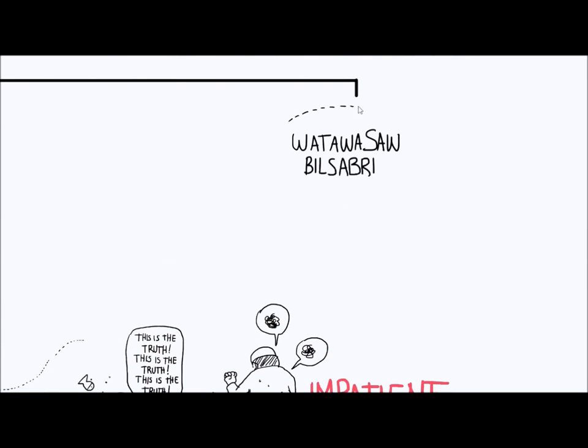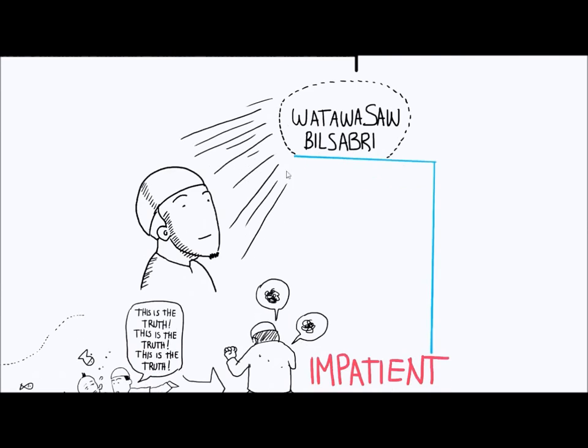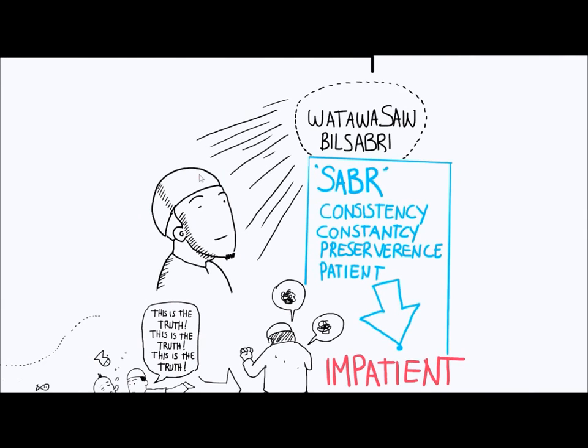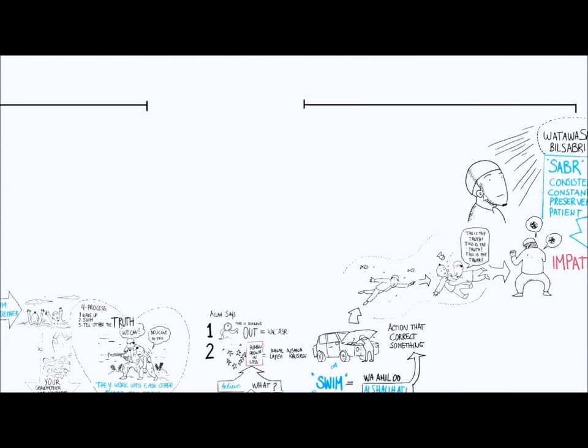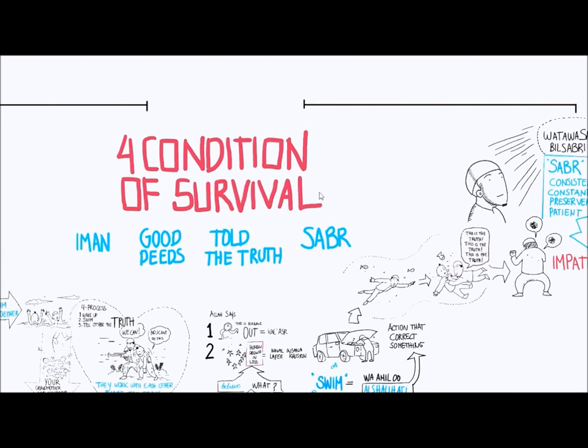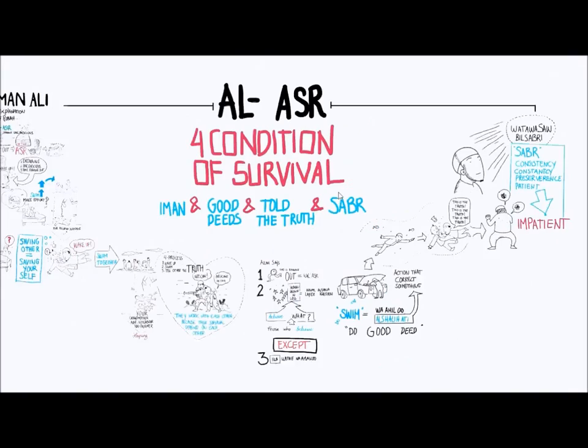They start drowning again. So what do you have to do? You have to go and wake them up again. This is tawasih bilhaq. And you might get tired of doing it. You might become impatient. So Allah also adds wa tawasawu bis-sabr. You gotta keep doing it. Sabr means consistency, constancy, perseverance, patience. You gotta remain on point. Because your survival depends on it. In the end, if you do all of these things but you have no patience and you give up, you drown too. So even if you had iman and you had good deeds and you told people about the truth but you didn't have sabr, you still drown. So how many conditions do you have to fulfill to survive? All four. All four conditions are required. They're critical and they're necessary, which is why there's a waw in between them. You see the logical progression from iman to amal as-salihat to tawasih bilhaq to tawasih bis-sabr, beautifully articulated in this surah.